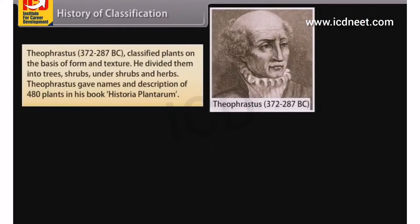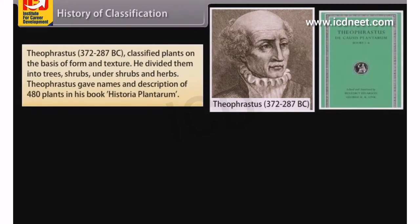Theophrastus (372–287 B.C.) classified plants on the basis of form and texture. He divided them into trees, shrubs, undershrubs, and herbs. Theophrastus gave names and descriptions of 480 plants in his book Historia Plantarum.